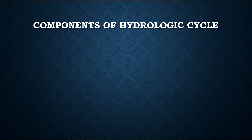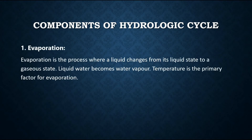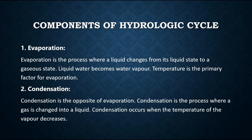The main components of the hydrologic cycle are: One, evaporation — the process where a liquid changes from its liquid state to a gaseous state; liquid water becomes water vapor. Temperature is the primary factor for evaporation. Two, condensation — the opposite of evaporation; it is the process where a gas is changed into a liquid. Condensation occurs when the temperature of the vapor decreases.